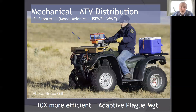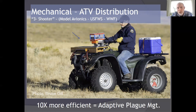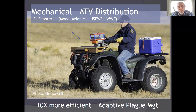The other huge piece of the puzzle was field distribution — we had to get away from walking around with zip-lock bags full of bait. We worked with Model Avionics, the Fish and Wildlife Service, and the World Wildlife Fund to build prototype triple-shooter bait distribution machines. There's a GPS unit in each, and as you drive along it throws one bait to the right, one to the left, and drops one out the bottom. This is at least 10 times more efficient than before, and we can treat 50 to 80 acres in one hour with one machine. With these efficiency gains, we could actually start thinking about adaptive plague management at larger scales.